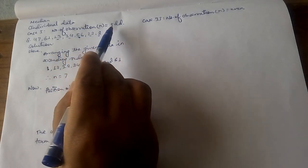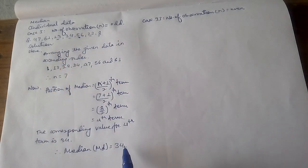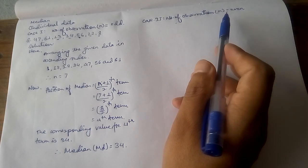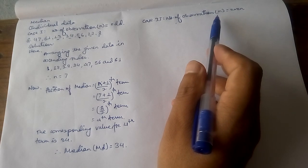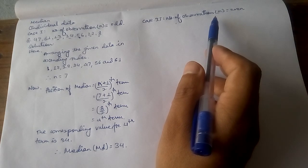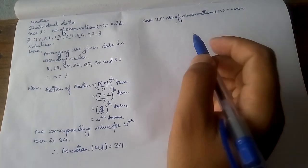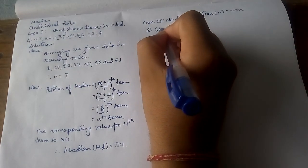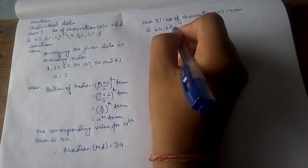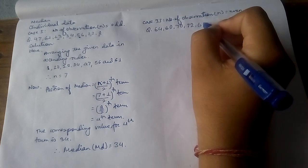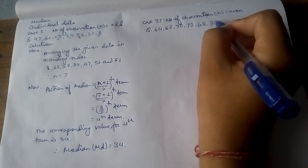Similarly, Case 2: the number of observations is even, meaning the number of terms is 2, 4, 6, 8, 10, etc. Let us suppose the data is: 64, 60, 70, 72, 68, 80.